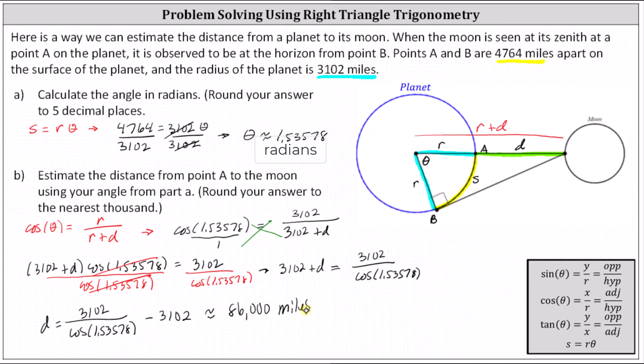We now know the distance from point A on the planet to the moon. This distance here is approximately 86,000 miles.